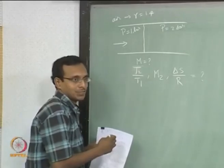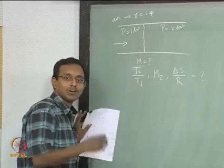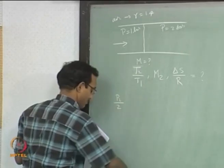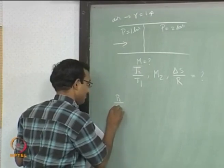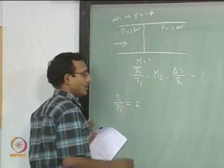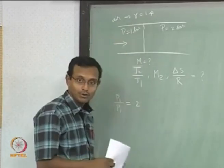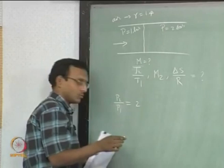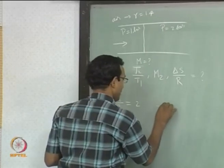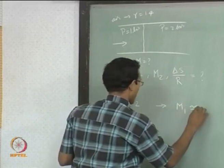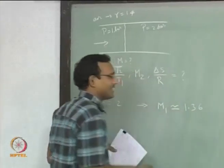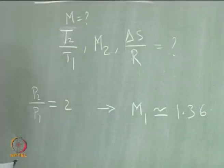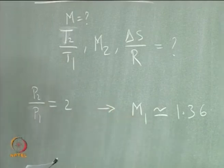We already know that normal shock tables will have P2/P1 as one of the columns. So all I have to do is find P2/P1, which happens to be 2. Now I go to normal shock tables for gamma equal to 1.4 and find the row where P2/P1 equals 2. If I do that calculation, I get M1 approximately equal to 1.36 — the exact table value is 1.996 or 1.997. I have the table so I can look at the number.